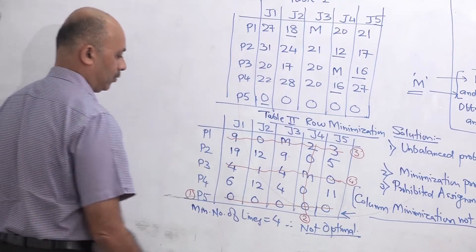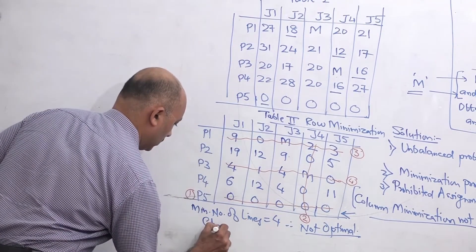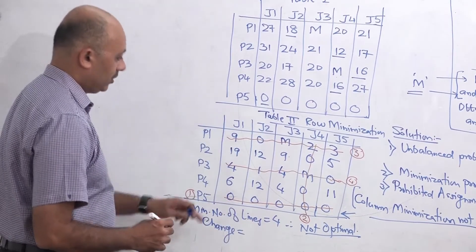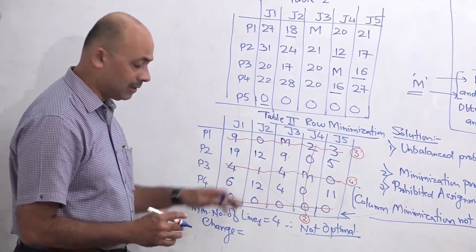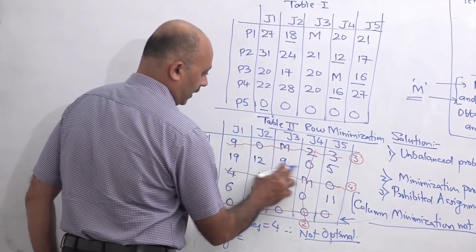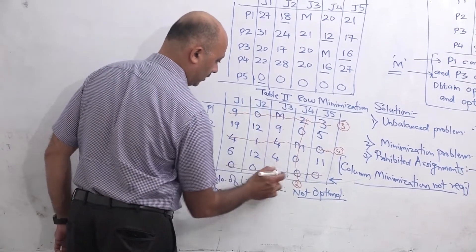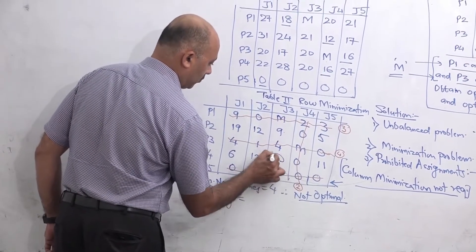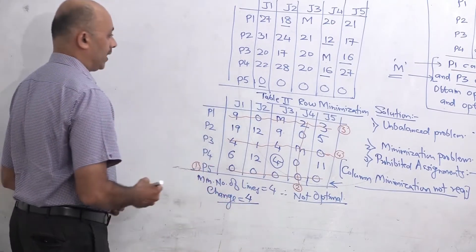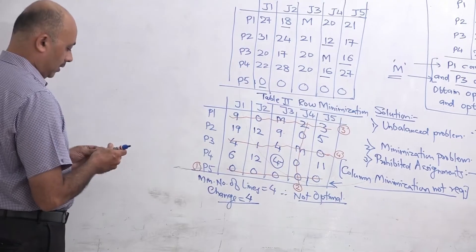We now identify the change value, which is the minimum of all open (uncovered) values: 19, 12, 9, 5, 6, 12, 4, 11. The minimum value is 4, so our change value is 4. We now write the third table and adjust values accordingly.